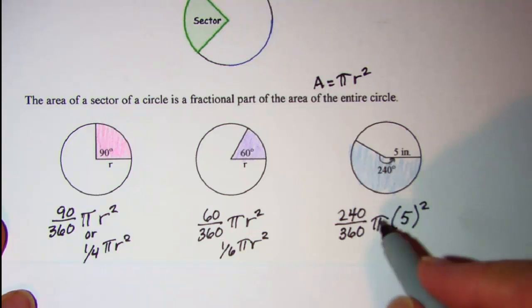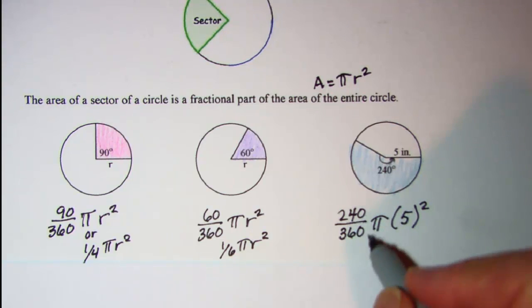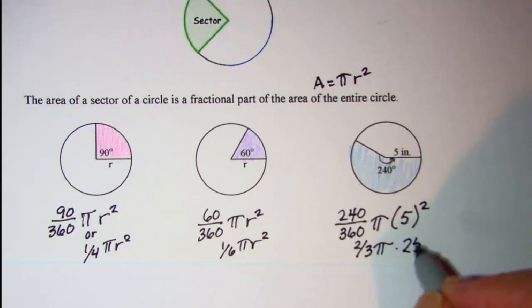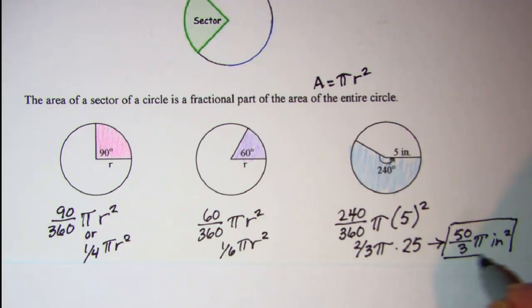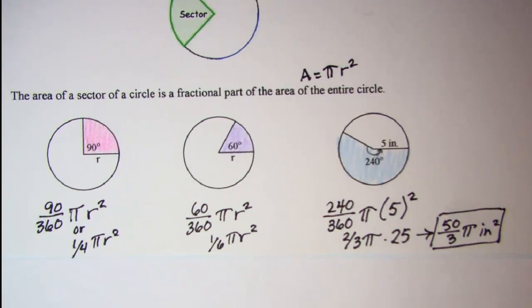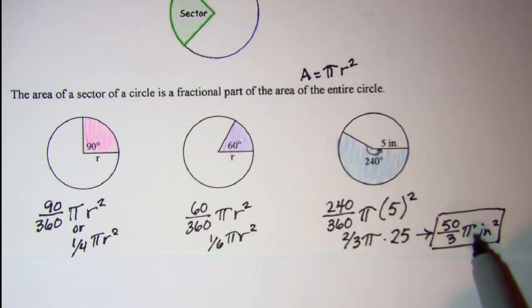If we do the math 240 over 360 is 2 thirds, 5 squared is 25 so this is the same as 50 over 3 pi inches squared. Now if you wanted to do the math you have a pi key on your calculator when you use that you have approximately 52.4 square inches.